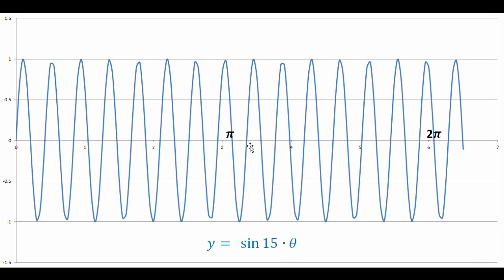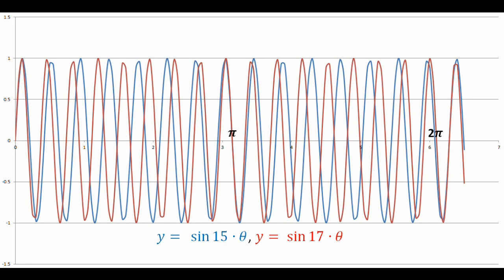This next example looks like quite a mess. Actually it is two regular sine waves with slightly different frequencies. The blue one is y equals sine of 15 times theta, the same as the previous example, but the red one has a slightly higher frequency — y equals sine of 17 times theta. While the frequencies are different, the amplitude of both waves is still one.